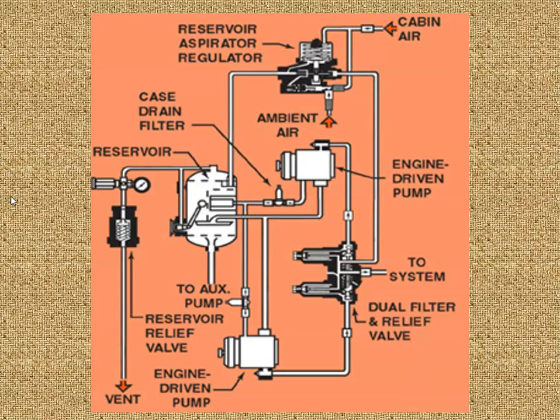This one here is showing we've got cabin air up here. So the same pressurization that we use to pressurize the cabin, we can use to pressurize the reservoir. Here we have an engine driven pump that's coming off of it. And there's a couple of other ways that some airplanes can use cabin air and you can also use engine bleed air to pressurize.